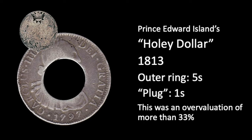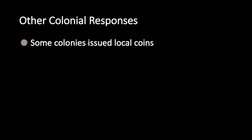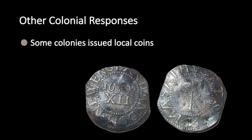Some colonies resorted to issues of local coins. The first of the British North American colonies to do this was the Massachusetts Bay Colony. In 1652, the colonial government ordered a local silversmith to strike lightweight shillings, six pennies, and three pennies to fill local demand. As these coins were more than 20% lighter than their sterling counterparts, they were unlikely to be acceptable outside the colony — keeping them circulating where the governor wanted. The colony continued to date the coins 1652 for some three decades to maintain the illusion they were struck when there was no king in England, though the British government put a stop to the issue in 1682.